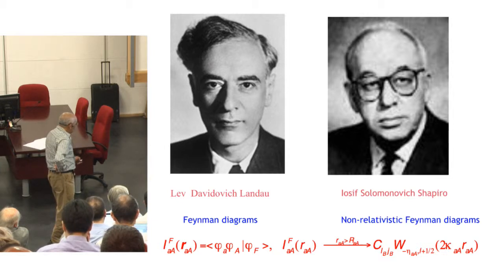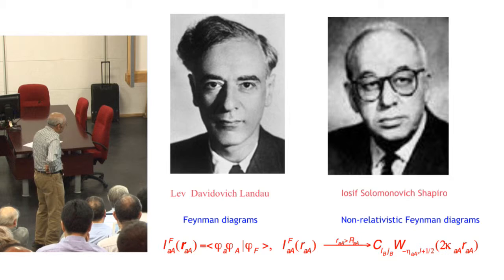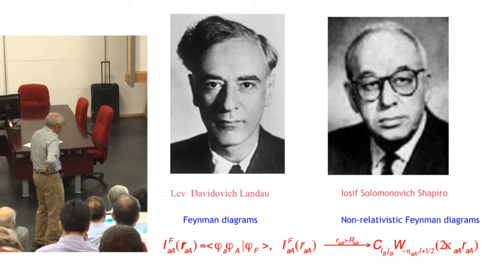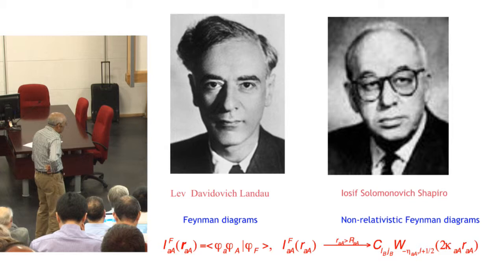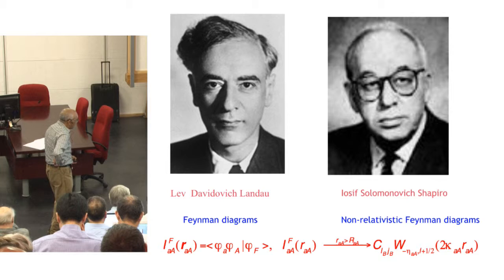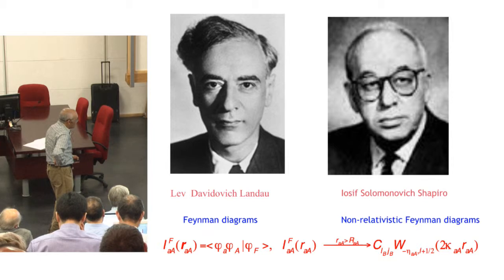If we have virtual decay of nucleus F into a two-body channel A plus a, then the overlap is the projection of the bound state wave function of nucleus F on the channel A plus a, where we integrate all the internal coordinates. It's a function of the distance between A and a, called the overlap function, and that's what we measure in nuclear reaction experiments. The asymptotic behavior of the radial overlap function at distances larger than the interaction radius is proportional to the Whittaker function. The amplitude is ANC. So if the reaction is peripheral, we measure ANC.